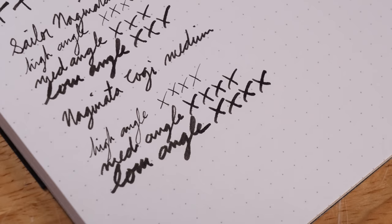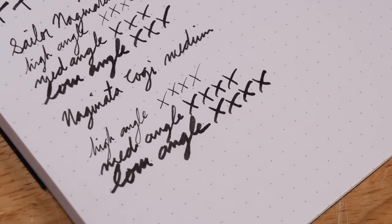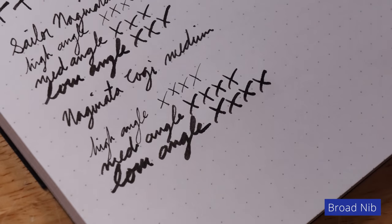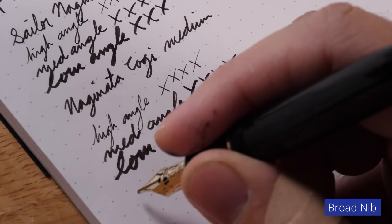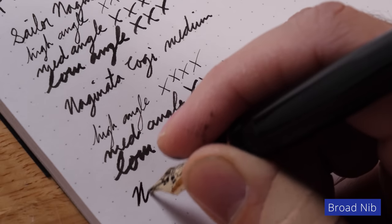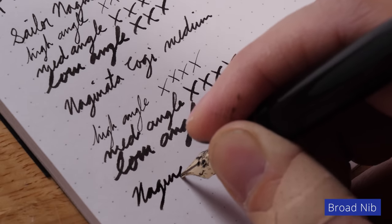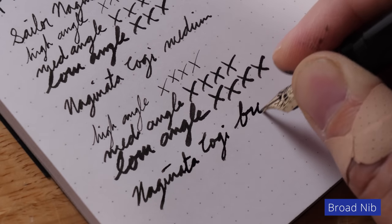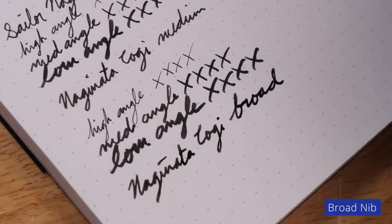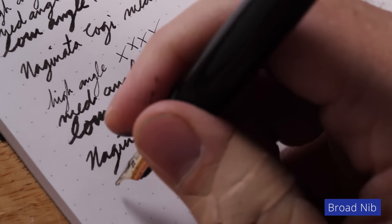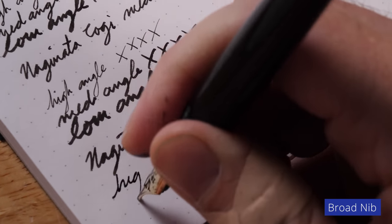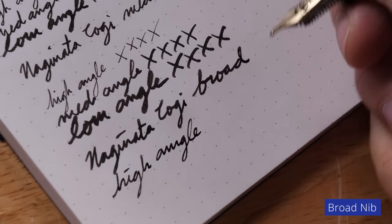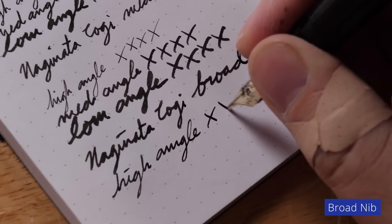Now, do you want to see an absolute fire hose? Because that's what you get with the broad. All right, let's do this. Naginata togi broad. This one feels very smooth. That I will say, but you can see already high angle, not angle, angle. Okay. That's your high angle.